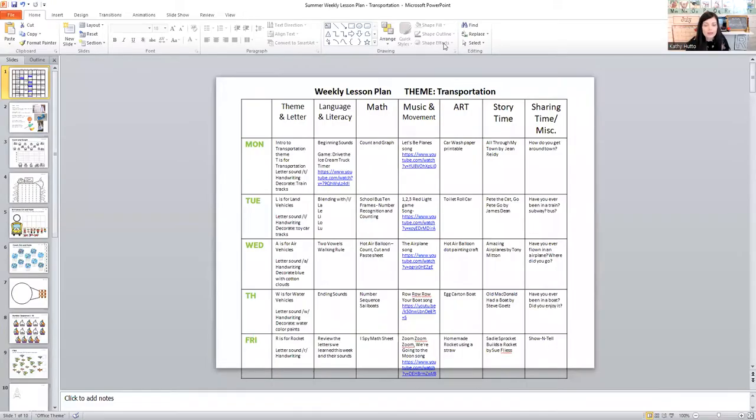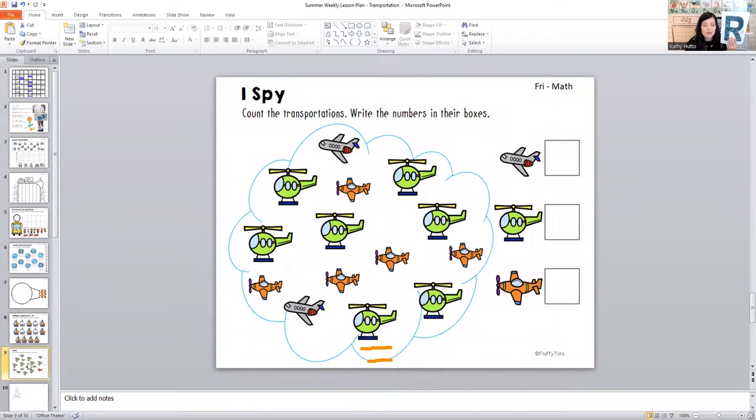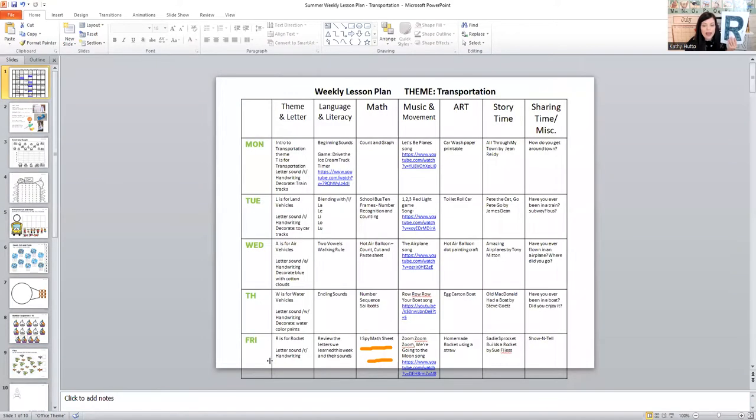For Friday, we did R is for rocket, things that go in space. We decorated the R just by coloring it black. Because when you look up at the night sky, you can see things in space like the moon and stars and planets twinkling. But otherwise, you have to take a rocket ship to see what's in space or use a telescope. So we decorated that black. We did a fun 'I Spy' math worksheet, looks like this. We just counted the rockets and the airplanes and helicopters and put the numbers to the side. That was our math for Friday.